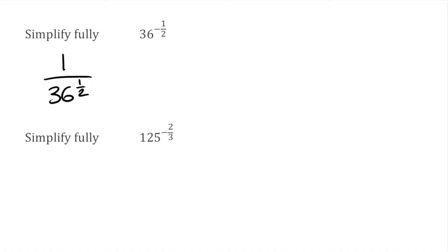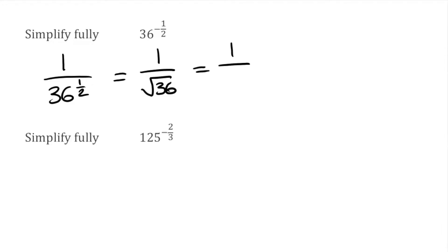Going back to fractional indices, the denominator shows what root we have to take, and the numerator shows what power we then have to raise it to. Whenever we've got a 1 on top, we don't need to do anything extra because raising to the power of 1 doesn't change anything. So for this example, 36 to the power of a half — because we've got a 2 on the bottom — gives us the square root of 36. So we've got 1 over the square root of 36, which simplifies to 1 over 6.